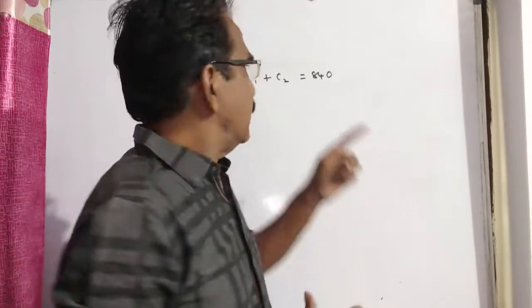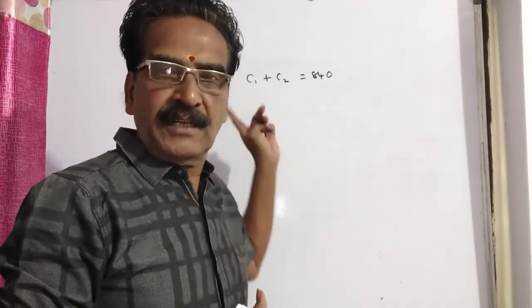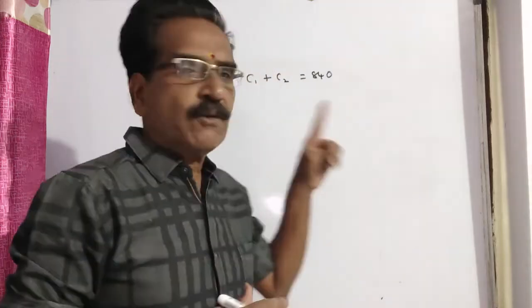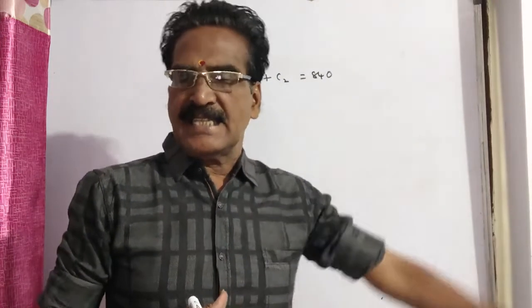Now C1 is sold at a gain of 16% and C2 is sold at a loss of 12%. Here it is said that there is no profit or no loss on the whole transaction. That means the profit on the first watch must be equal to the loss on the second watch.